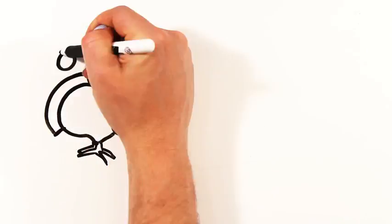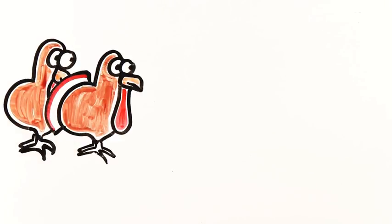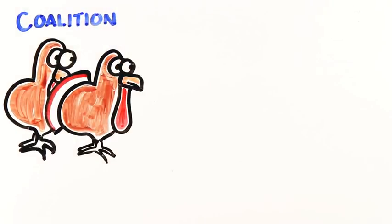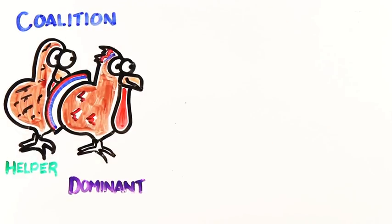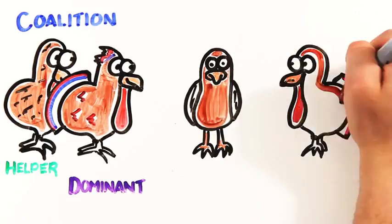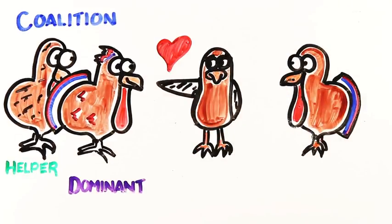Another good tactic a squad can use is that of a wild turkey. Wild turkeys attract mates in a coalition where one turkey is dominant and the other turkeys are helpers. These helper turkeys wear less colorful plumage, making the dominant one look like a better catch. And this strategy almost doubles the reproductive success compared to those turkeys who ride solo.